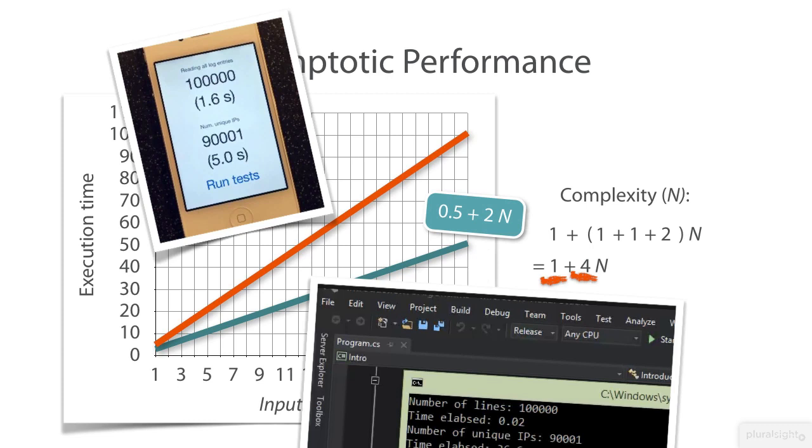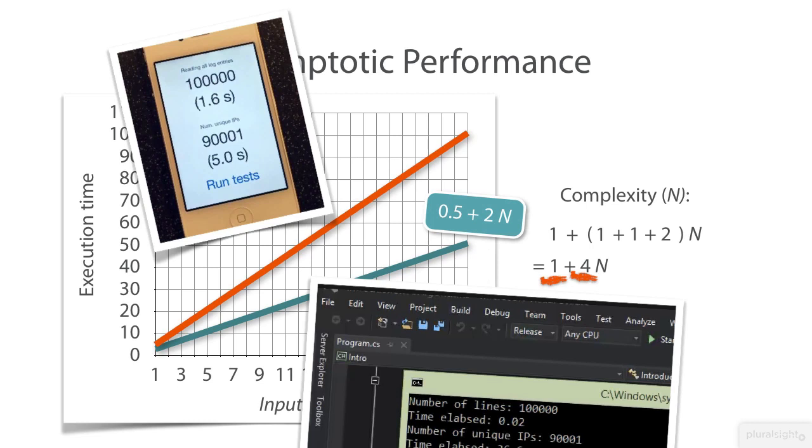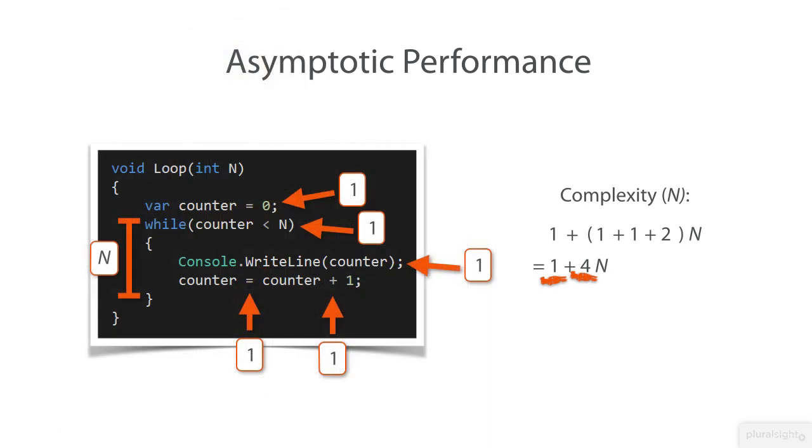And we can therefore ask if that constant helps understanding the nature of the performance behavior. So it seems that the significant part of the expression for the execution time in this example is n times some constant factor, where this constant factor depends on a number of things - for example, which hardware runs the code.